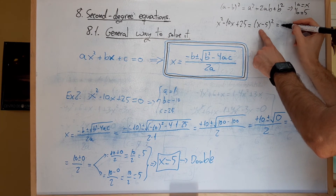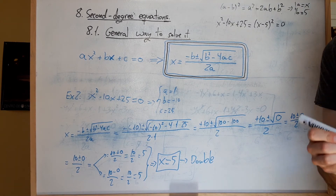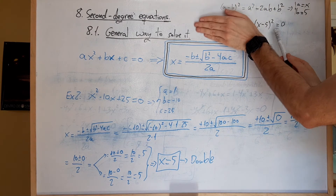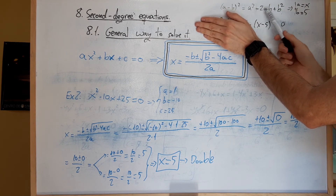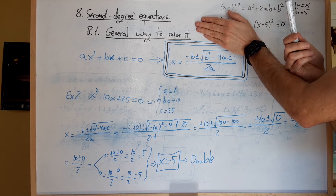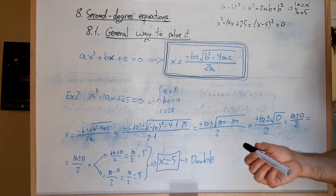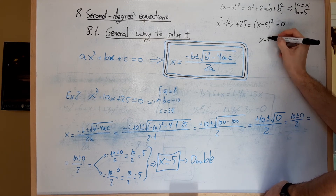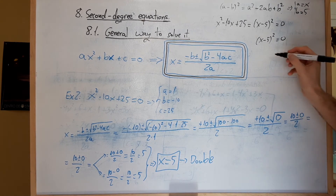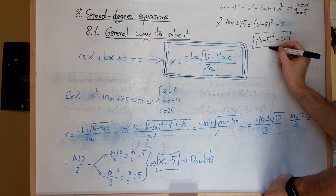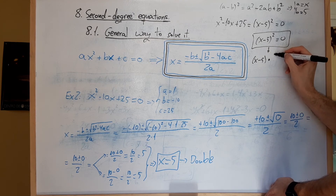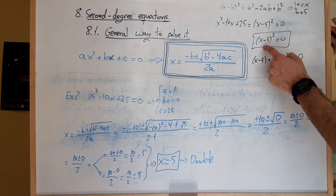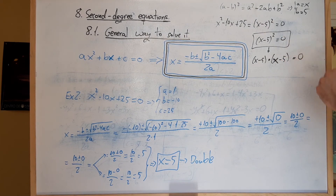Como esto estaba igualado a 0, entonces esto de aquí también tiene que ser igual a 0 — es la misma ecuación. Esto igual a 0 es la misma ecuación que esto de aquí igual a 0. Entonces, si os encontráis x menos 5 al cuadrado igual a 0, en principio lo que haríamos sería desarrollar esto mediante identidad notable para llegar aquí, y luego resolvemos por ese camino. Pero quiero que os fijéis en que x menos 5 al cuadrado se podría escribir como x menos 5 por x menos 5 igual a 0, porque x menos 5 al cuadrado es x menos 5 por x menos 5.